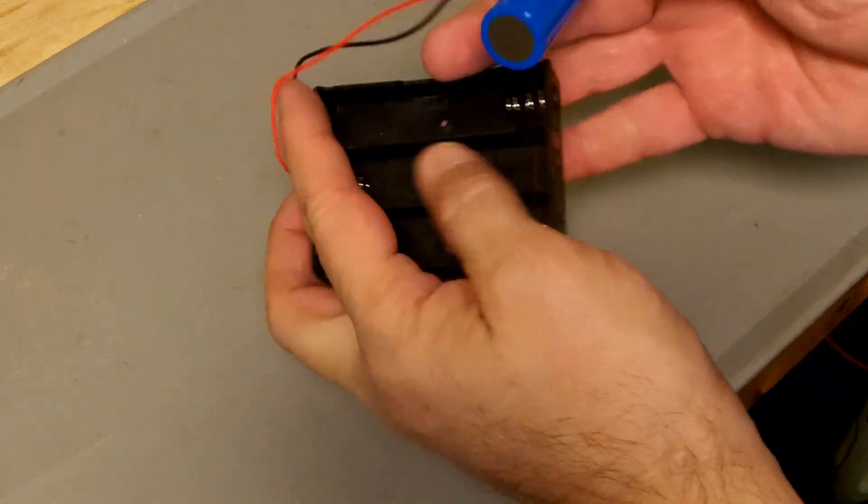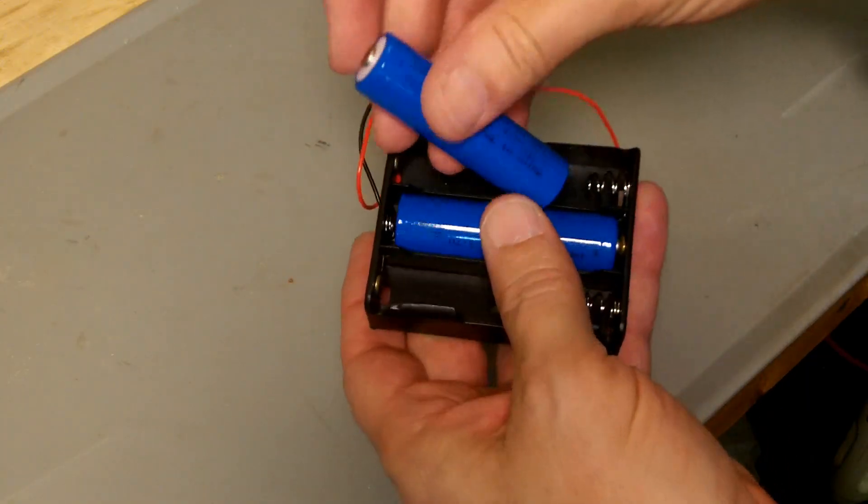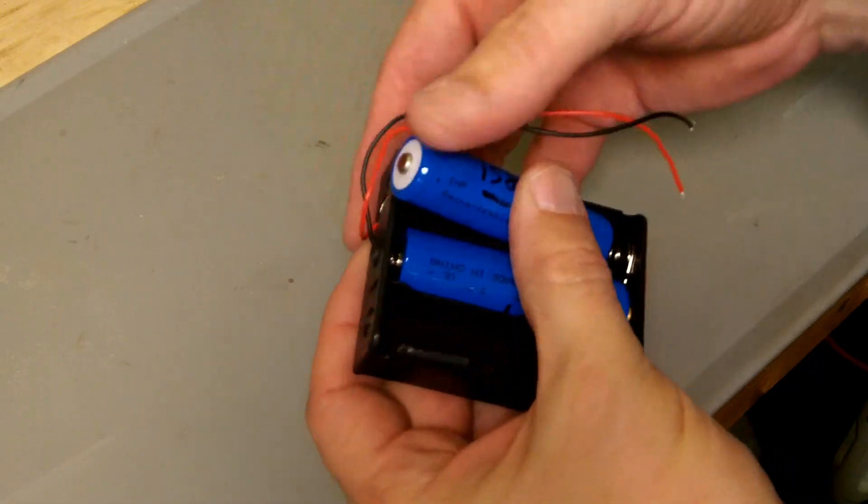So really the only difference between this and any other battery holder is the specific size. And so this is sized specifically to fit 18650 cells.